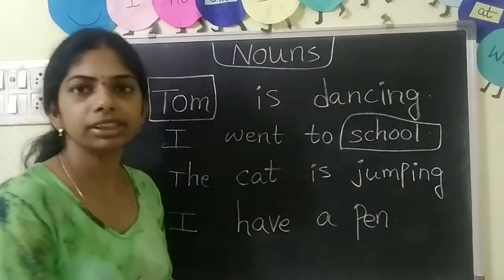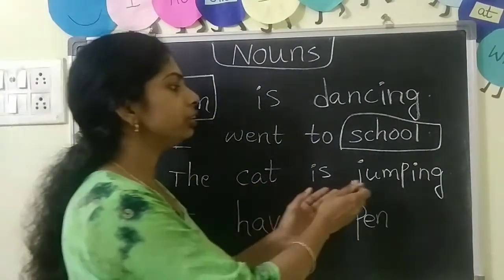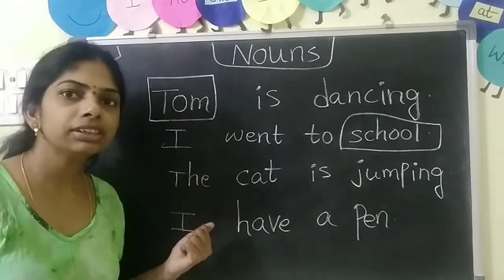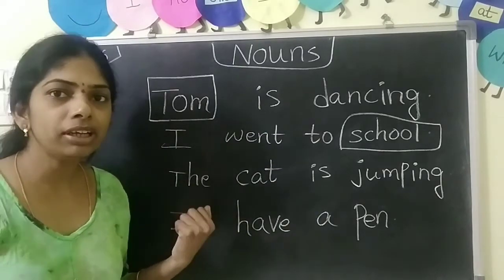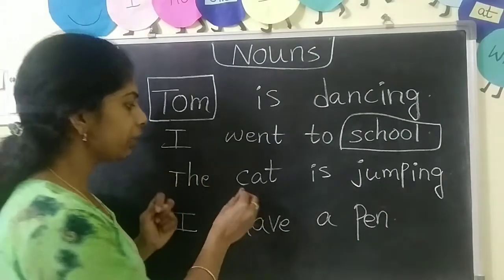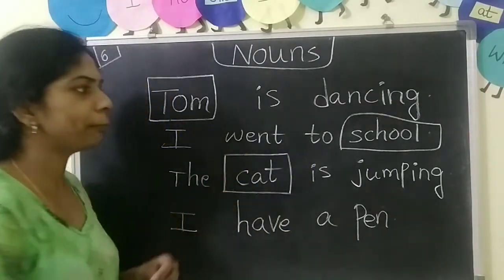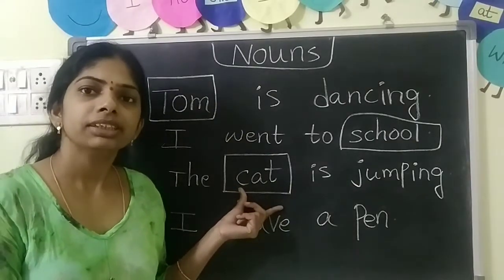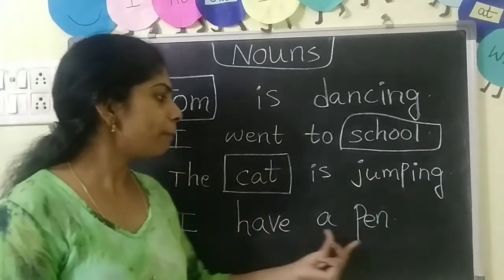The cat is jumping. Is there any animal name? Yes — where is the animal name? Cat. The cat is jumping, so cat is a noun in this sentence.